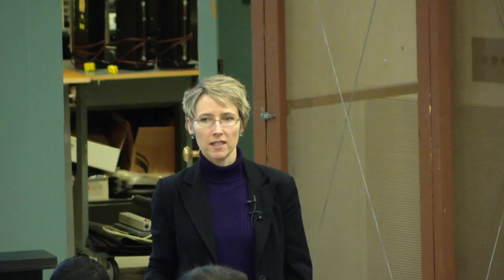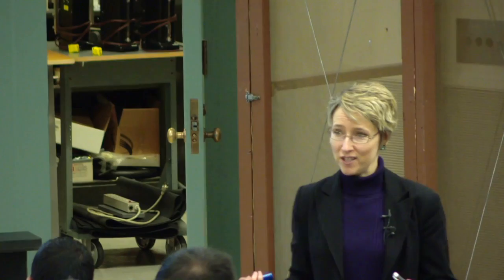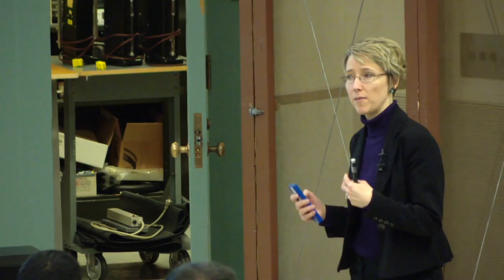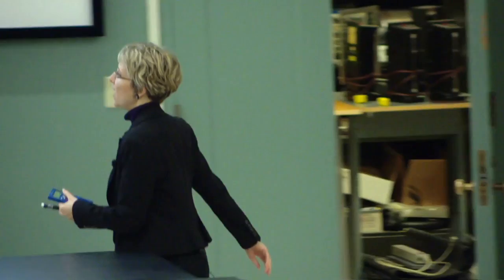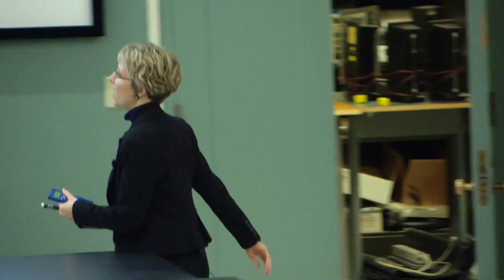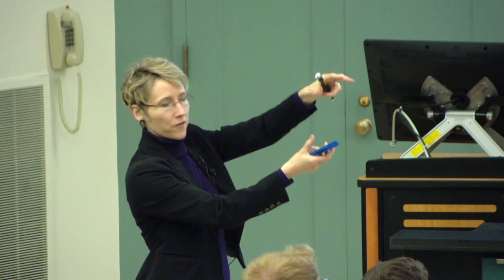Electric flux is a flexible concept — you could use it for different things. We thought about water flux: water molecules per second times an area. You can also think in terms of fish flux. Here's Dory — there's a certain flux of Dorys going by — and these areas are like nets that catch a certain number of fish. If the net is perpendicular to the school of fish, I'll get a lot of fish. If it's tilted, I catch fewer fish. If the net is completely parallel to the school of fish, I'm not going to catch any fish.